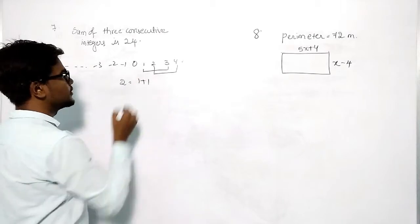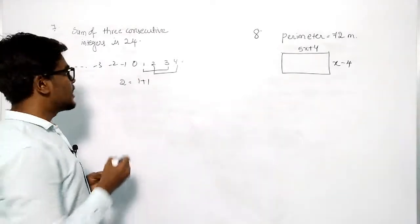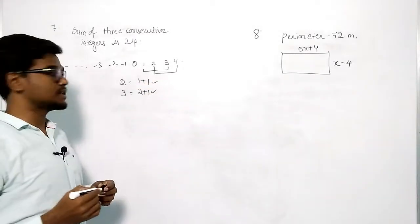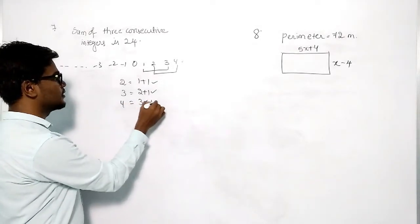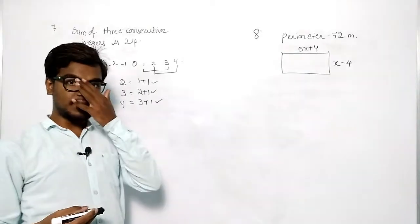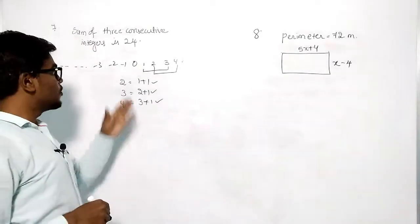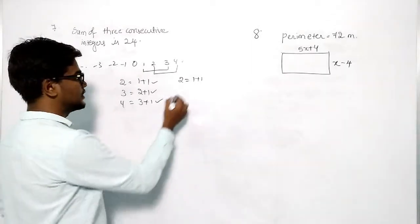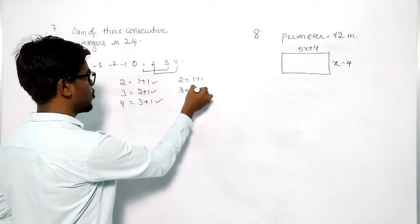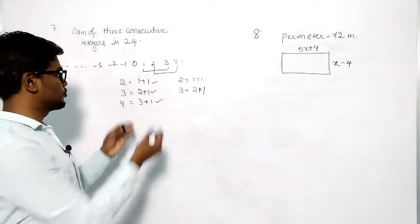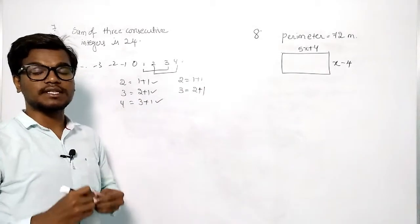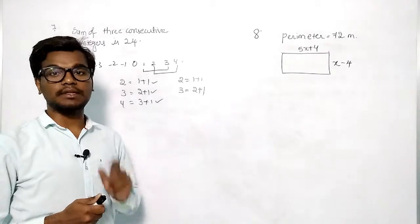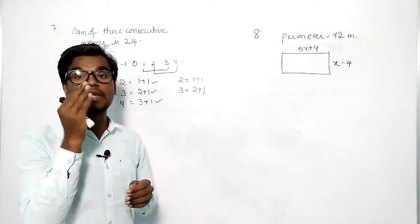You can write these in a pattern: two is one plus one, three is two plus one, four is three plus one — each increases by one. So one is a constant, and the value that is constantly rising is the one we need to take as a variable.